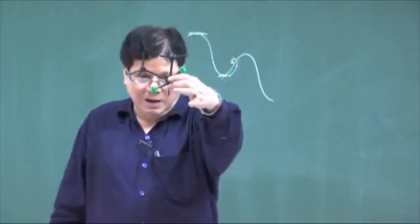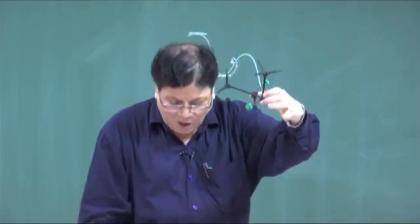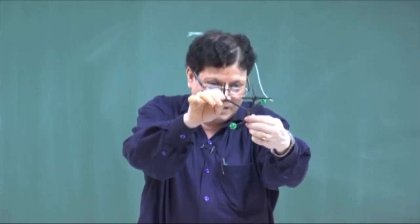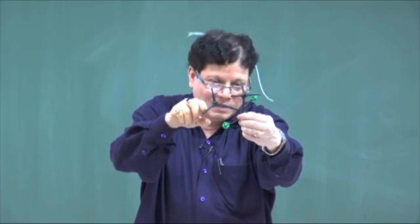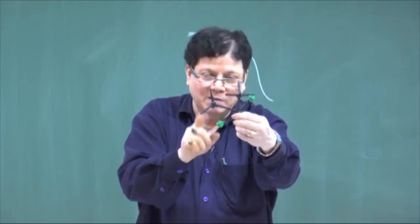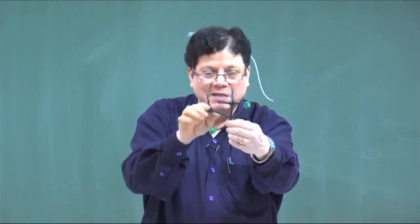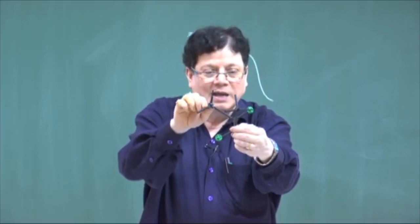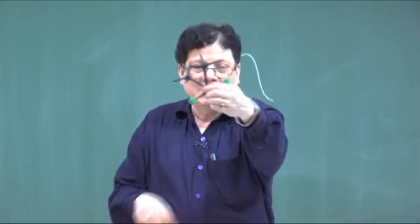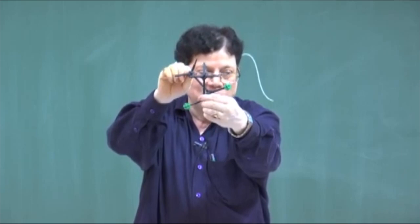Coming back to the gauche form: there is no torsional strain in the gauche form, because the energy goes down and attains a minimum value at 60 degrees. If you cross 60 degrees, you are introducing methyl-hydrogen steric strain and bringing back the bond opposition strain — that electron-electron repulsion. So the energy goes to a minima and then rises again to a maxima. There is no torsional strain at 60 degrees, but there will be torsional strain when you deviate from the staggered form, because the molecule wants to return to the staggered gauche form.